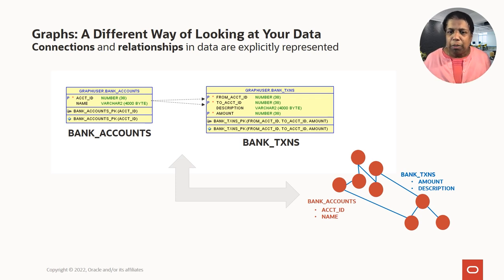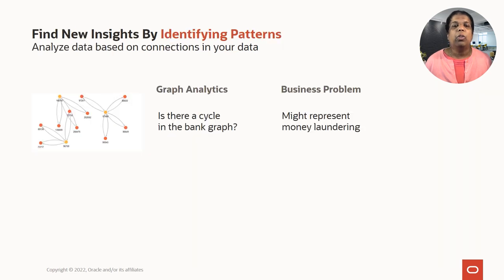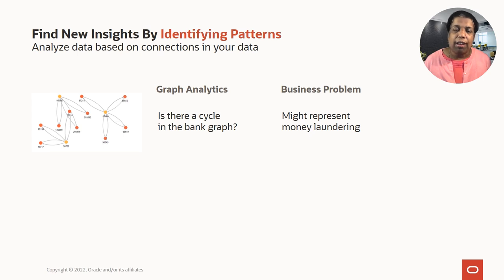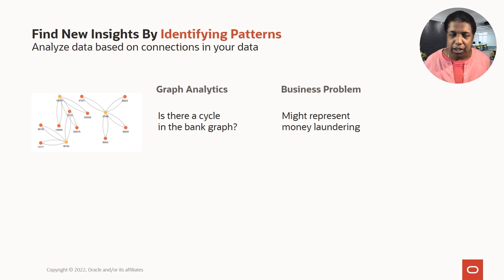When you explicitly represent edges in your graph, it allows you to run graph queries on your data to identify interesting patterns. For example, you can ask a graph query to see whether there is a cycle in your graph, where money started from one account, was transferred through many intermediate accounts, and then came back to the source account. That could represent money laundering.